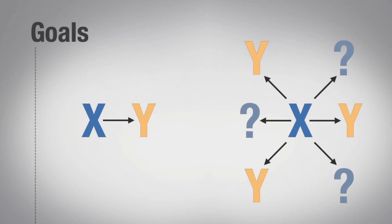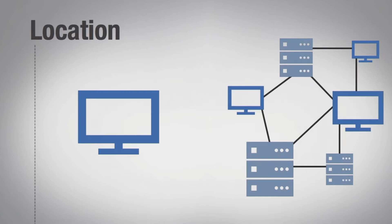The first difference is goals. Small data is usually gathered for a specific goal. Big data, on the other hand, may have a goal in mind when it's first started, but things can evolve or take unexpected directions. The second is location. Small data is usually in one place and often in a single computer file, while big data can be in multiple files on multiple servers in different geographic locations.